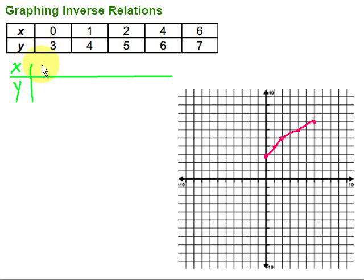So it's going to be 3, 0, then 4, 1, and 5, 2, 6, 4, and 7, 6. So now I'm going to go ahead and graph those values. So let's see what happens.